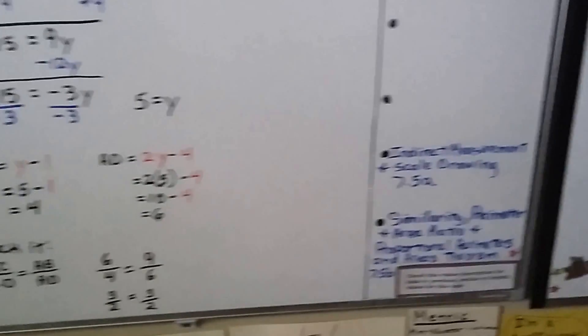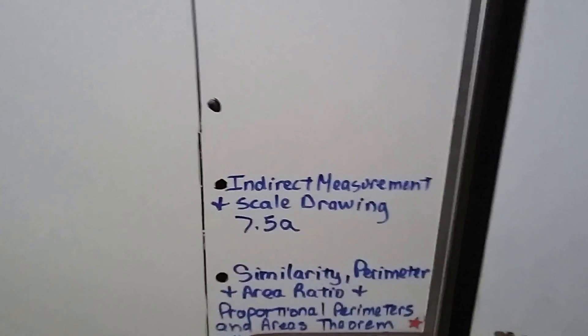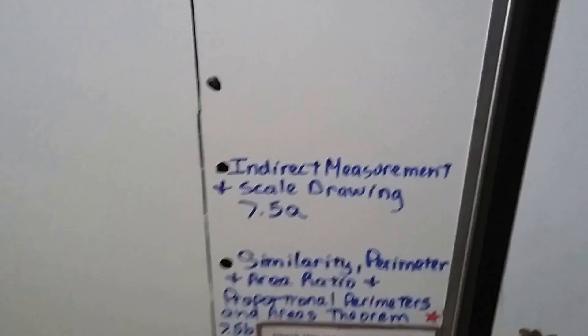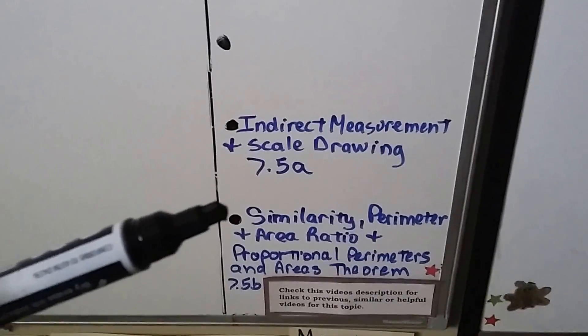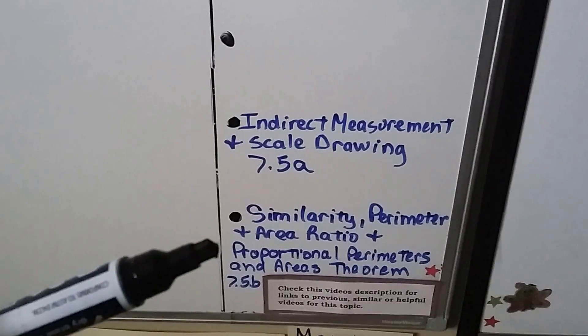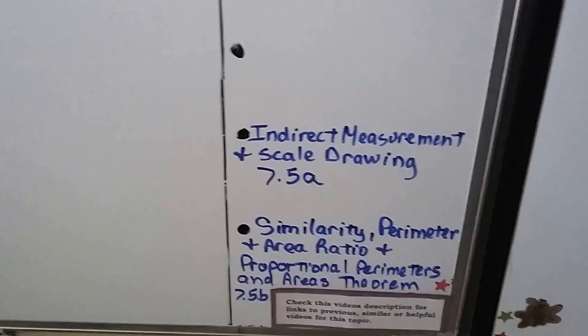Our next lesson is indirect measurement and scale drawings. That's going to be 7.5a. After that, we're going to talk about similarity perimeter and area ratio and we have proportional perimeters and areas theorem. That'll be 7.5a, two lessons.